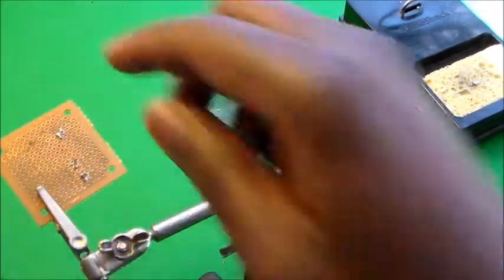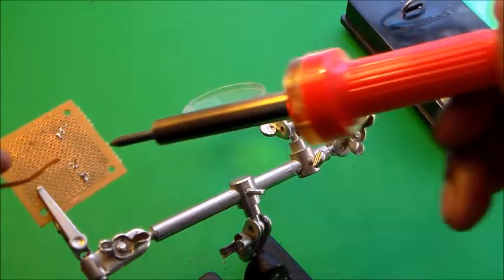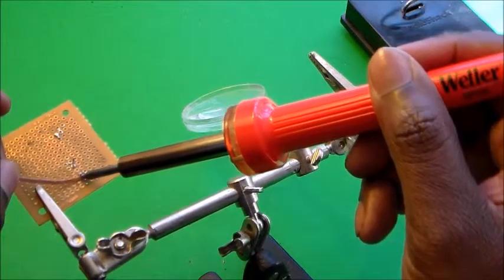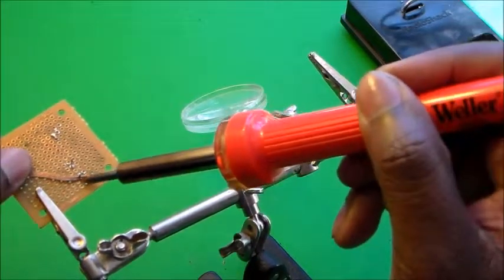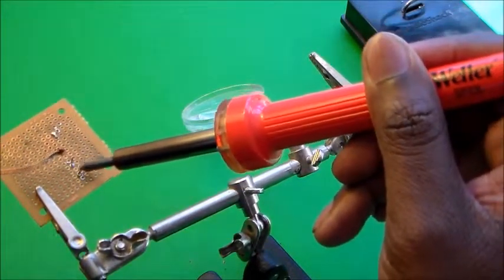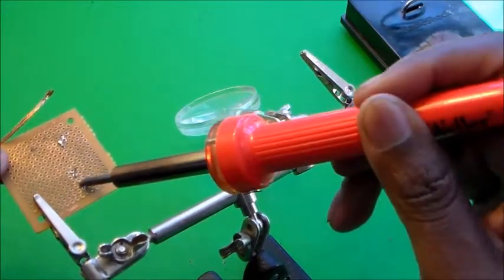So we go ahead now. We take the wick, we put that onto the component here, the wires, and that sucks up some of the solder. Then we can just push on the wire through the top here and it falls right through.